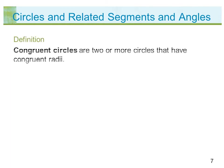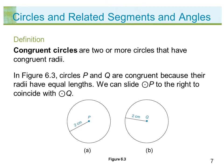Congruent circles are two or more circles that have congruent radii. In figure 6.3, circles P and Q are congruent because their radii have equal lengths. We can slide circle P to the right to coincide with circle Q.